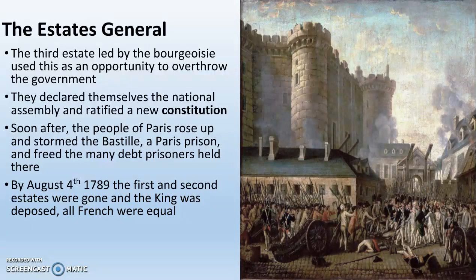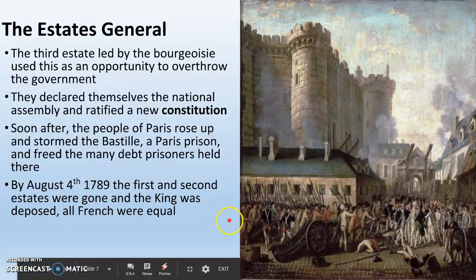The king no longer has power or say in France. The people of Paris rise up and storm the Bastille — it looks like a castle, but it's actually a prison. In the Bastille there were hundreds and hundreds of people who had been imprisoned for debt. Back in the day, if you had too much debt and couldn't pay it, they would throw you in jail. People did not think it was fair that the king could have all this debt and go unpunished while normal people went to prison. So they stormed the Bastille and freed the prisoners. By August 4th, 1789, the First and Second Estates are gone, the king is deposed, and technically all French people are equal.